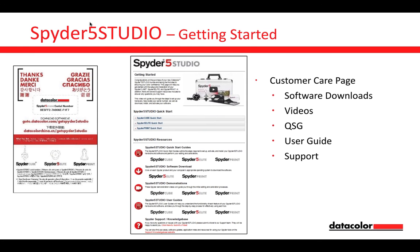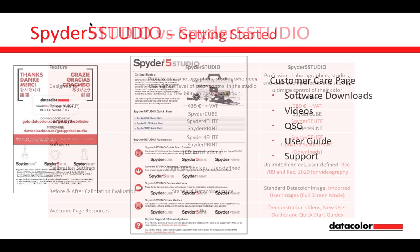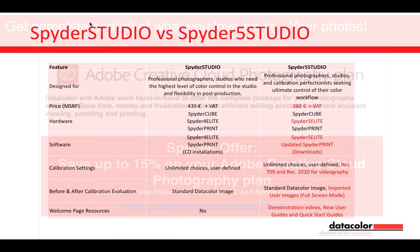Nowadays you don't have to worry about having discs — just download the relevant software from the DataColor site. As soon as you get the kit, go to the Getting Started page on the DataColor website to download your relevant software. The card that comes in the case tells you your serial numbers for the relevant devices. There's also a quick start guide. And the lovely people at DataColor have dropped the price by 55 euros, giving you a much more affordable chance to get your print, screen, and capture calibrated all in one go.